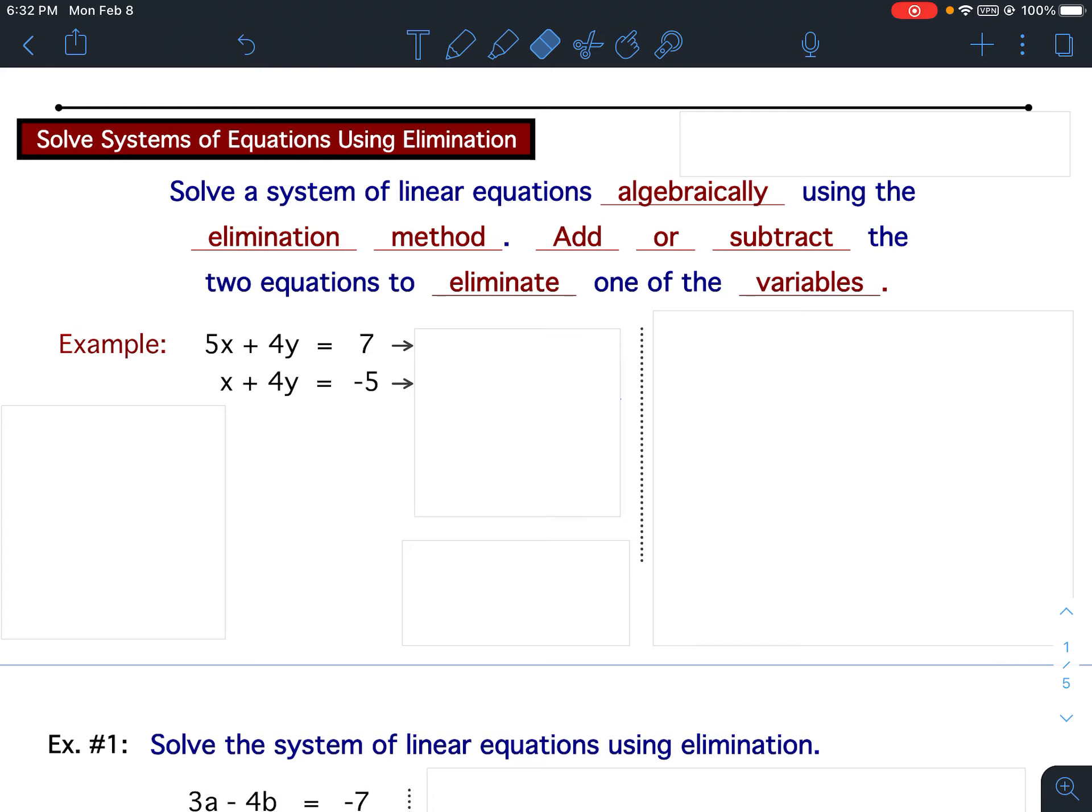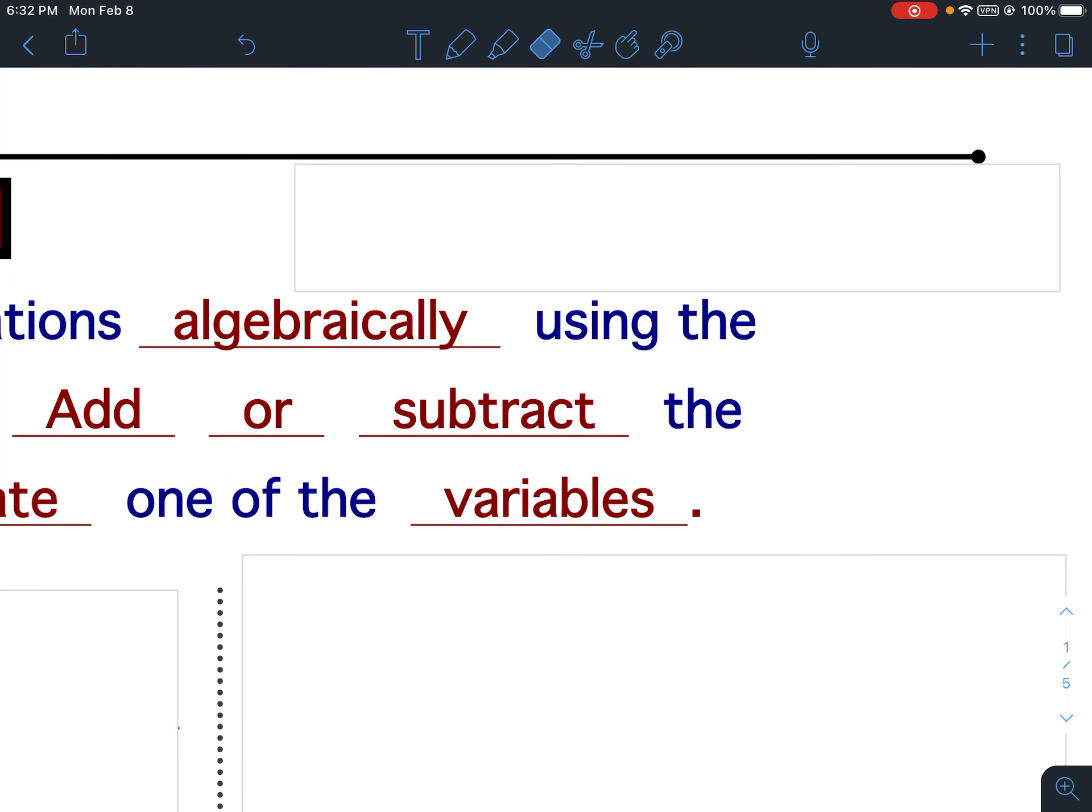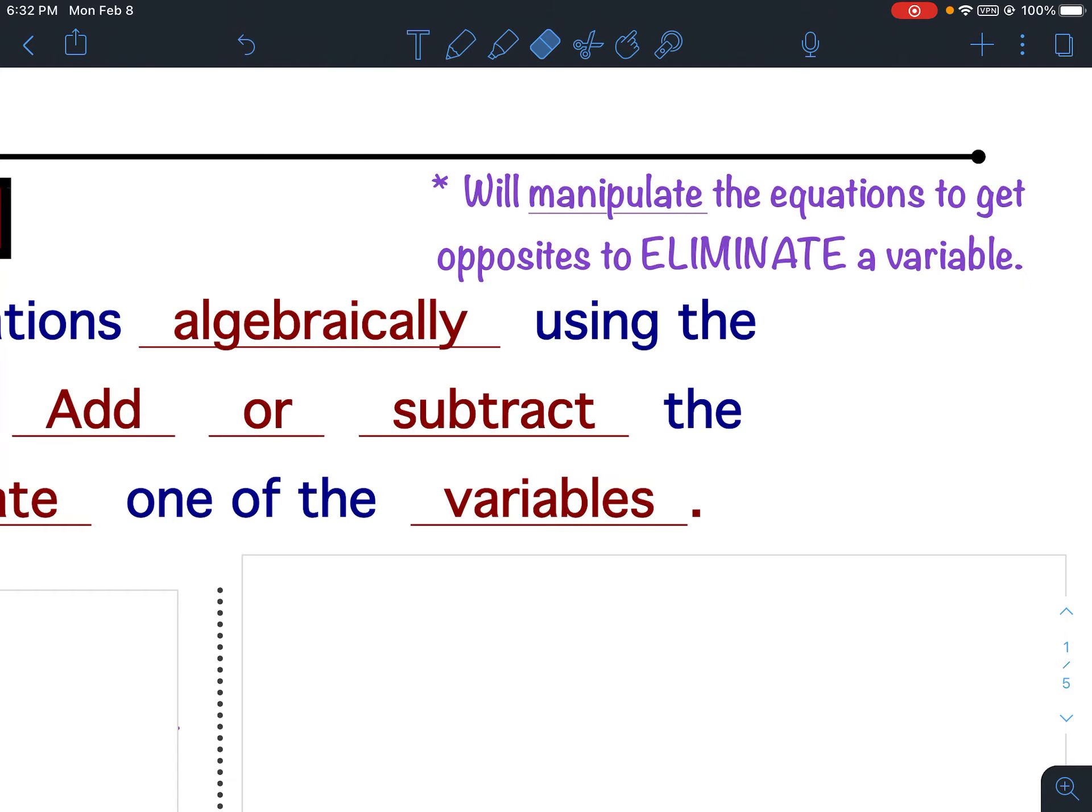So again, we want to eliminate a variable. To do so, we may have to manipulate an equation. Between the filled in blank and below the line that runs across the paper, I want you to write this down. We'll manipulate the equations to get opposites to eliminate a variable. We will be manipulating the equations to get opposites to eliminate a variable. Pause your video and get that written down.